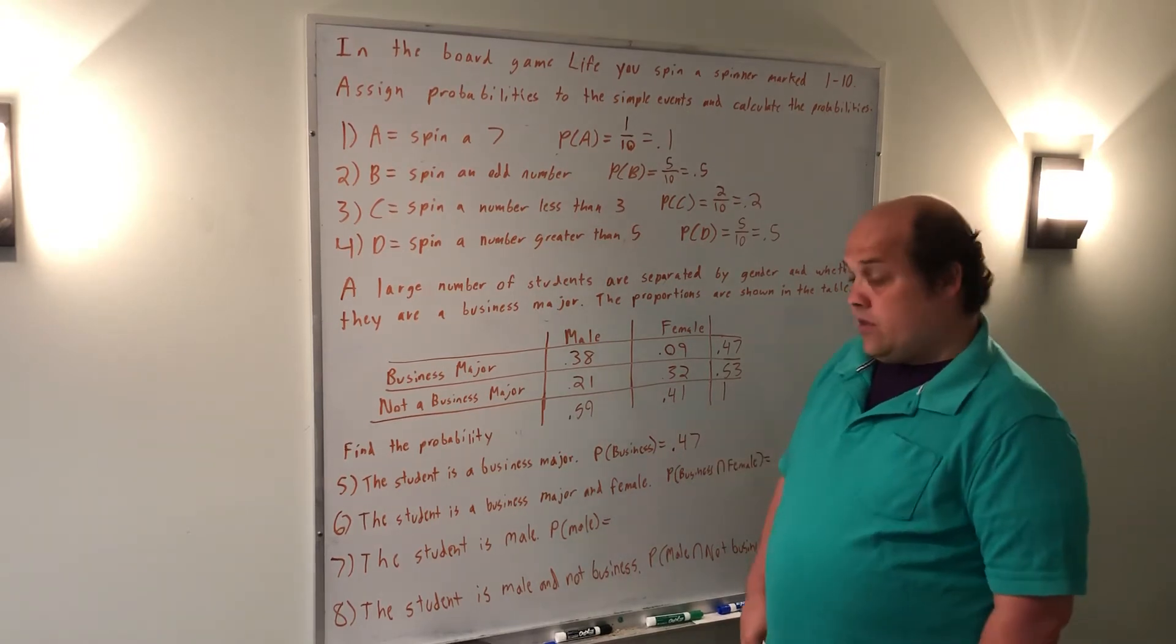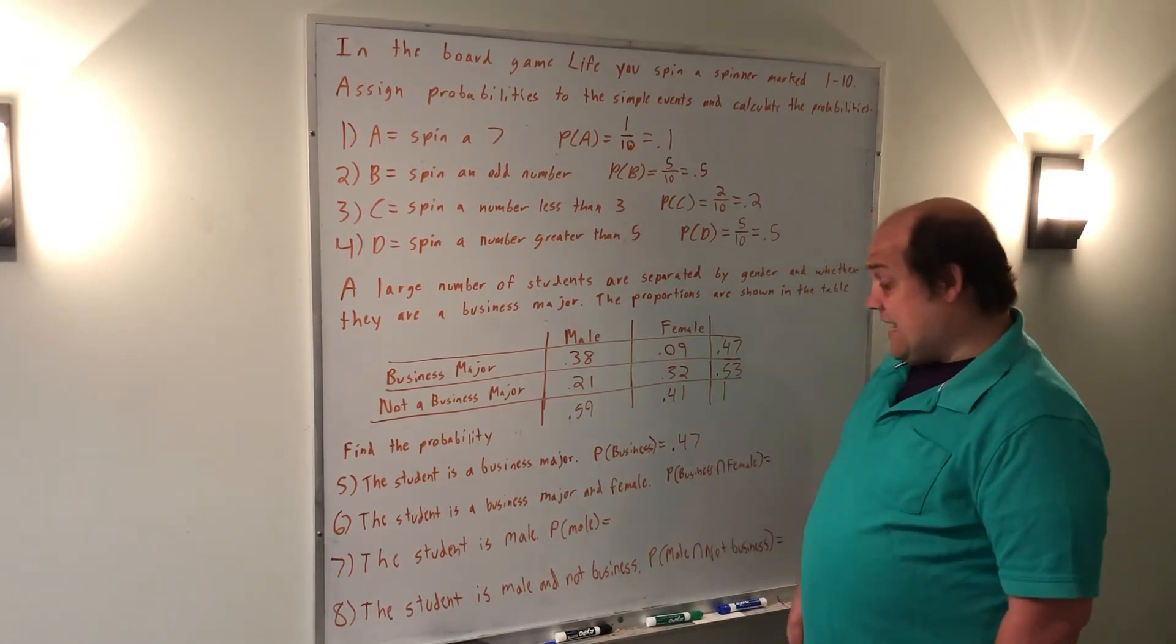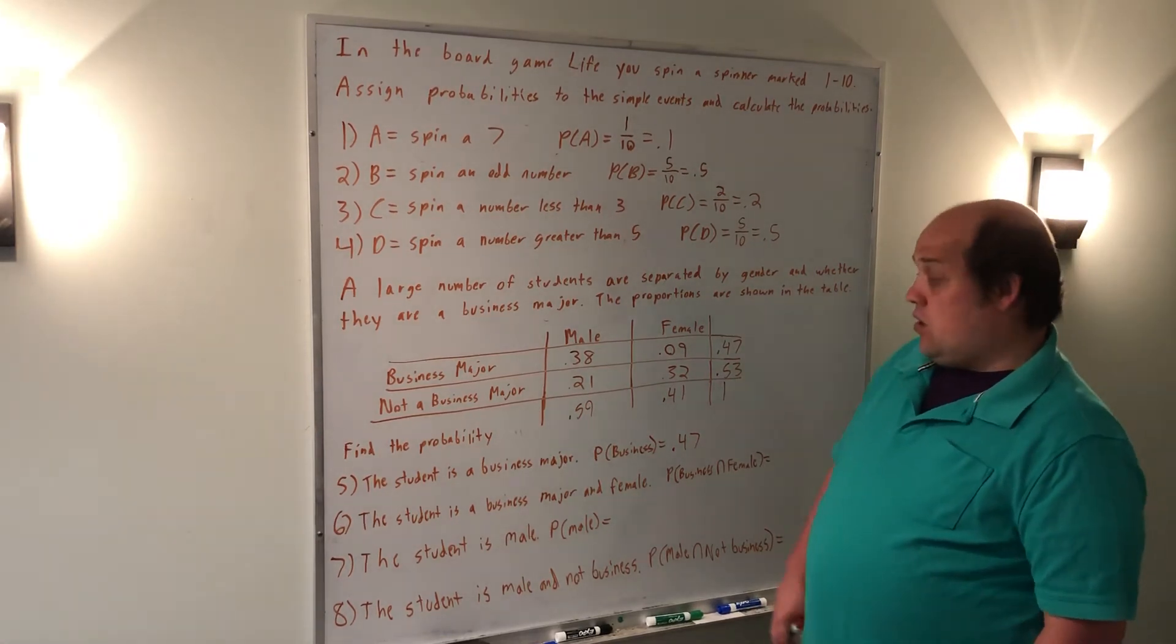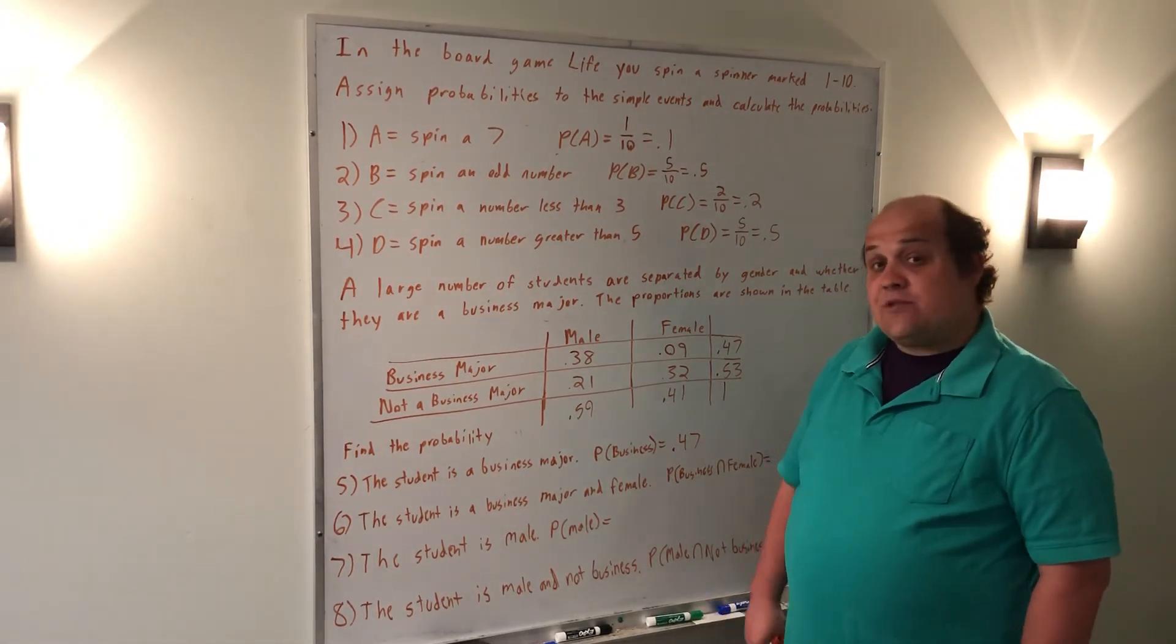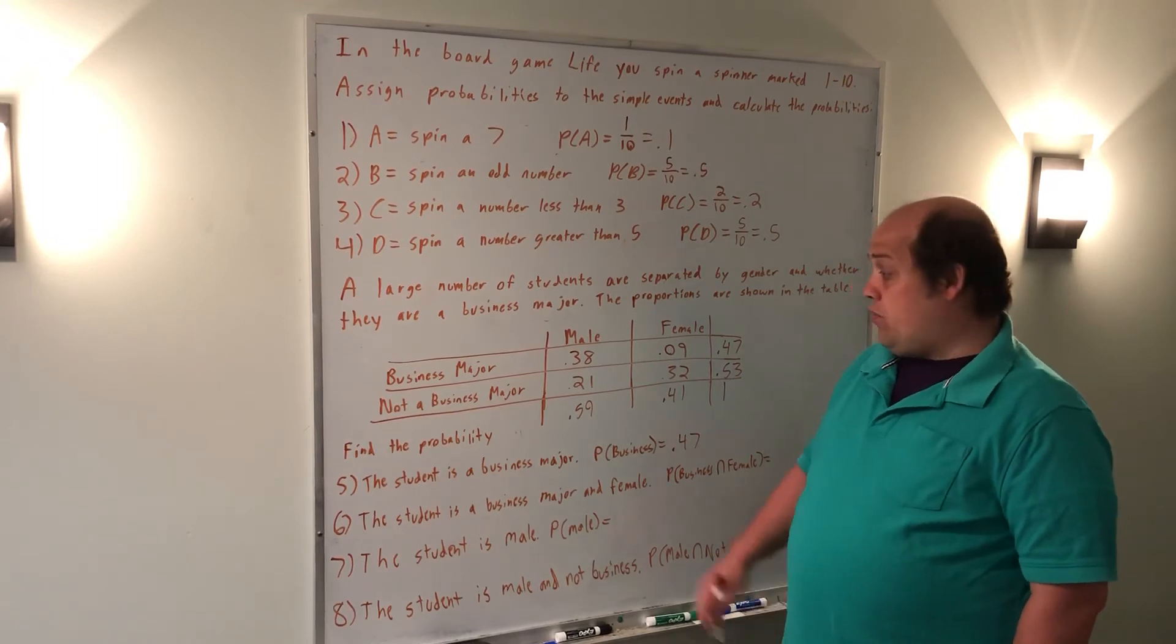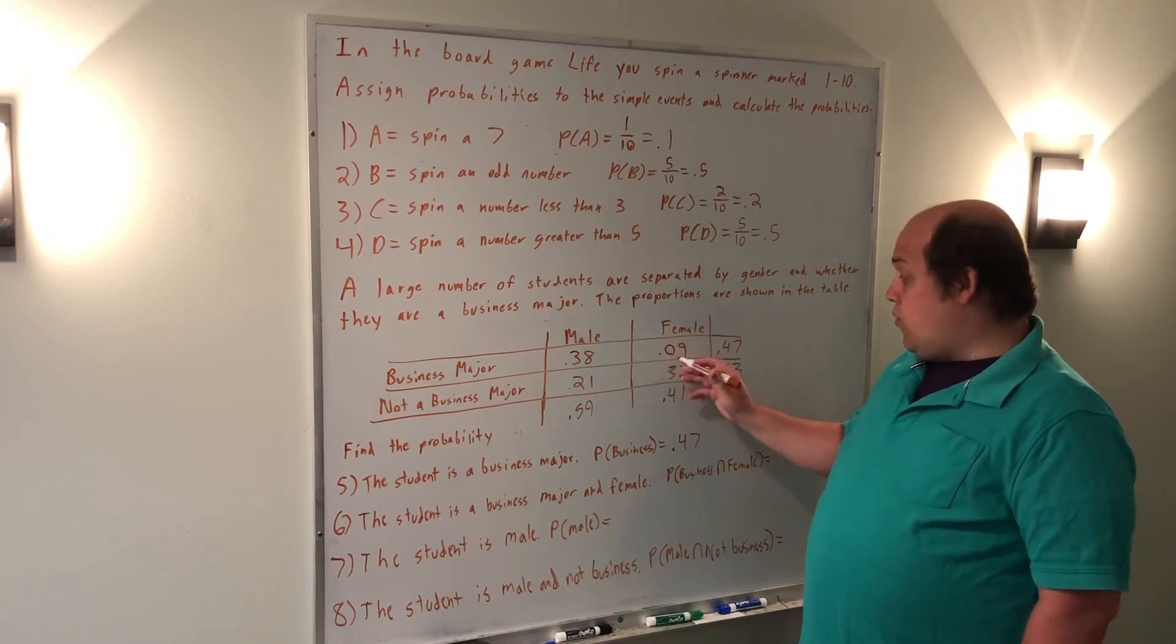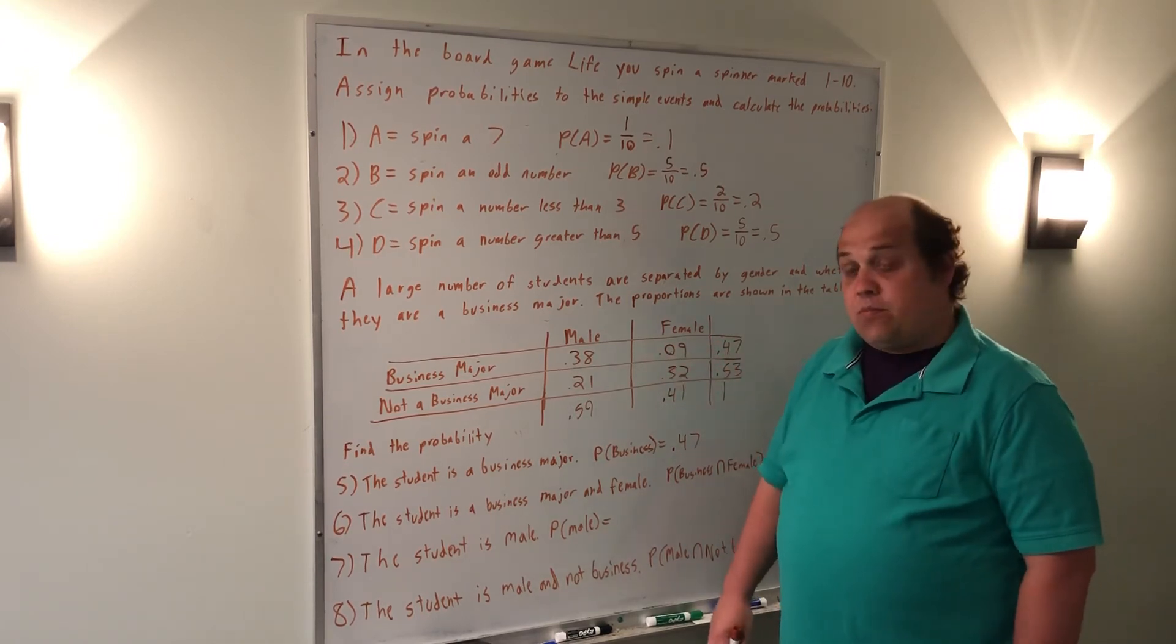Question 6 asks, the student is a business major and female. Well, business major and female is a specific cell within the table. Here's where business major meets female. So right here, this 0.09 represents the proportion.